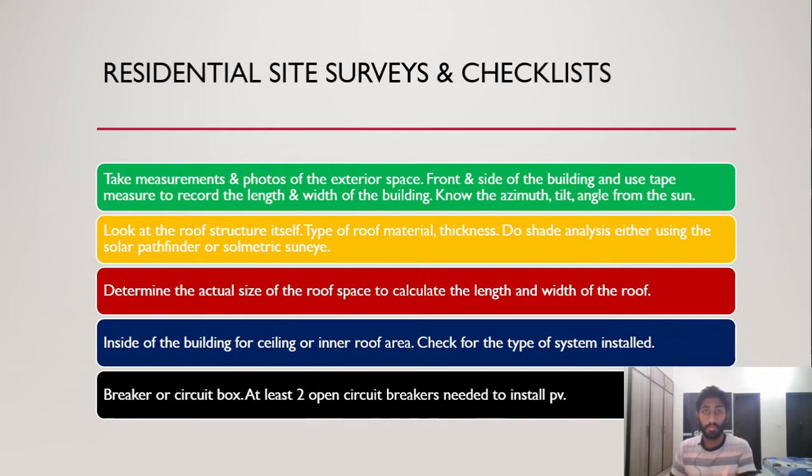Do shade analysis - see how many hours of sun or shade will be present during the year using any digital Solmetric SunEye or Solar Pathfinder instrument to do the calculations and measurements. Then determine the actual size of the roof space to calculate the area and length of the roof.